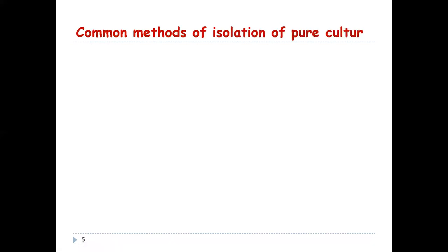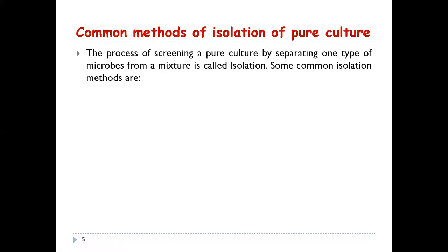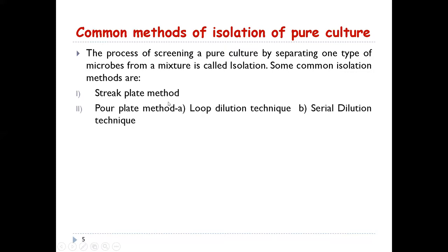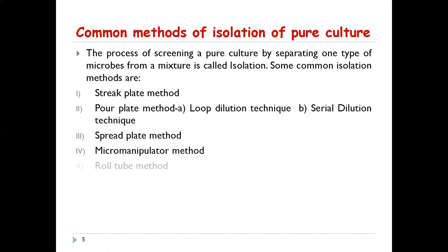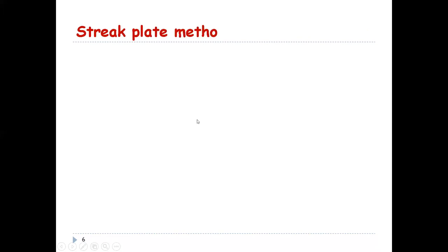The process of screening a pure culture by separating it from a mixture is called isolation. Common methods of isolation are: streak plate method, which uses loop dilution and serial dilution techniques; spread plate method; micro-manipulator method; and roll loop method. In this practical we are going to see the streak plate method, which is the most widely used technique for isolation of cultures.